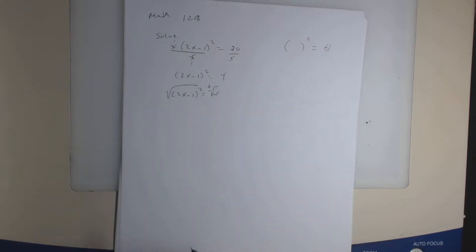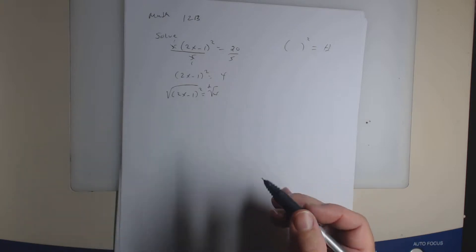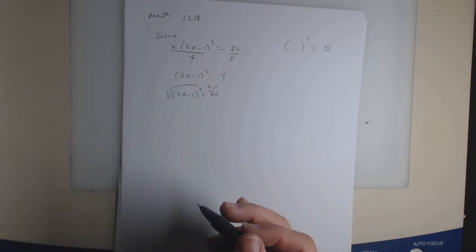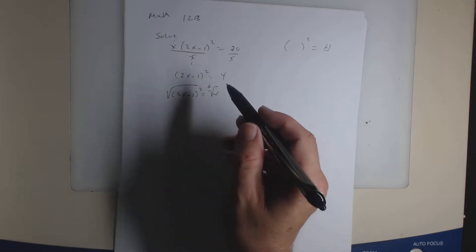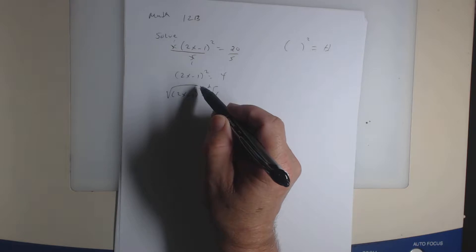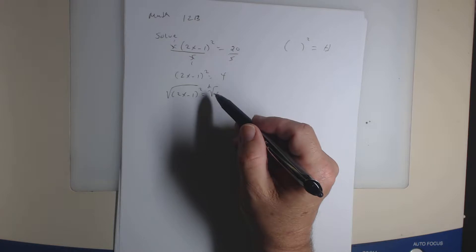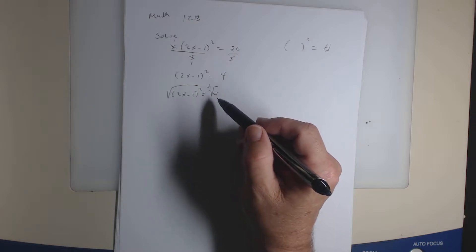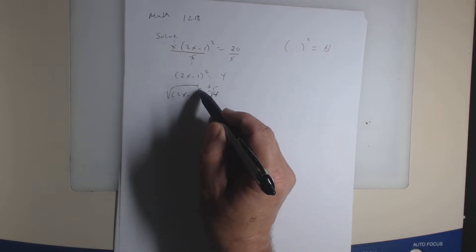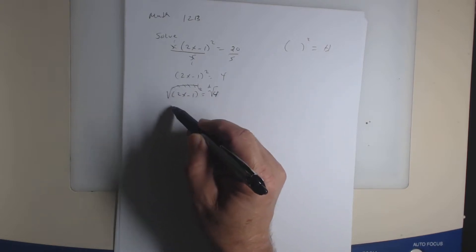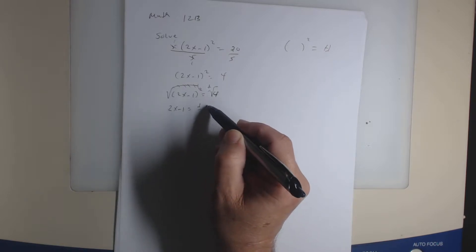You get plus or minus — don't forget the plus or minus. Whenever you take the even root — square root, fourth root, sixth root, and so on — you're going to do plus or minus. What is this on the right side of the equation? Square root of 4. Plus or minus square root of 4. So the square root and the square cancel each other, and you get 2x minus 1 equals plus or minus 2.